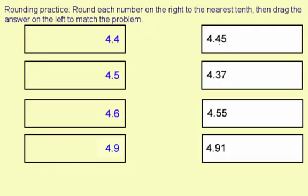So this one, 4.45, we're rounding to the nearest tenth, which is right here. Look at the next digit over to the right. You have 5, which means you're going to round up. So it's actually going to be 4.5.